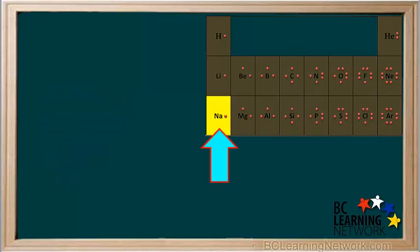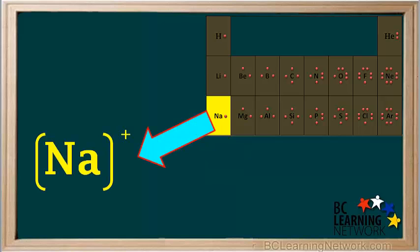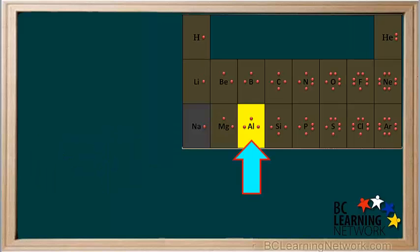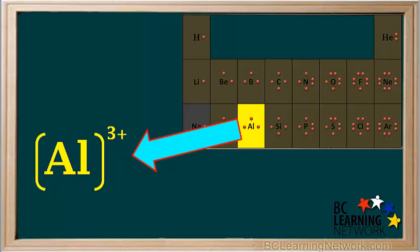A sodium atom has one valence electron. The sodium atom will readily lose this valence electron and form a sodium+ ion. And an aluminum atom, which has three valence electrons, will lose these three electrons and form the ion Al3+. This is the Lewis diagram for Al3+.